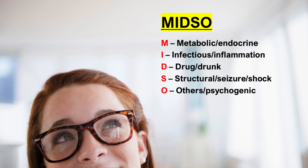The mnemonic MISO. M stands for Metabolic or Endocrine. I stands for Infectious or Inflammation. D stands for Drug or Drunk. S stands for Structural, Seizure, or Shock. O stands for Others or Psychogenic.